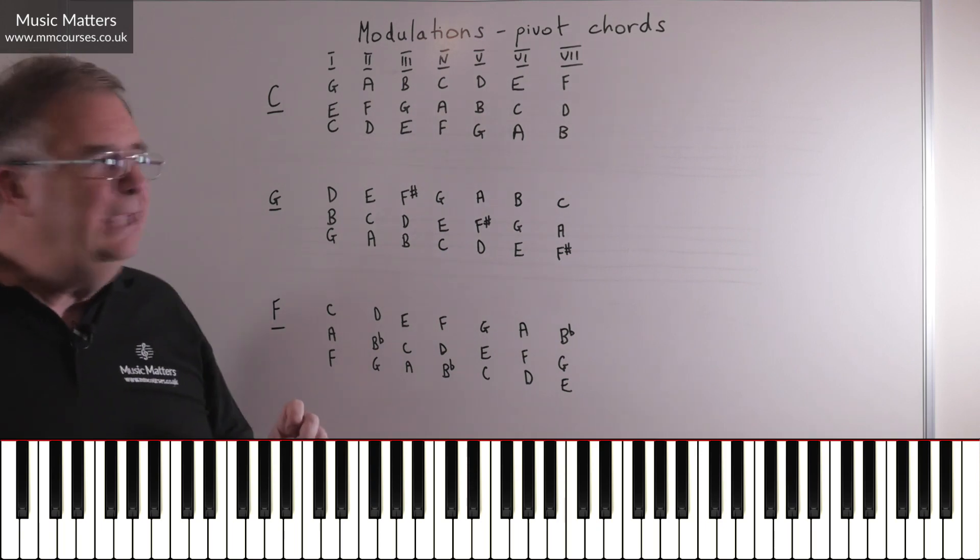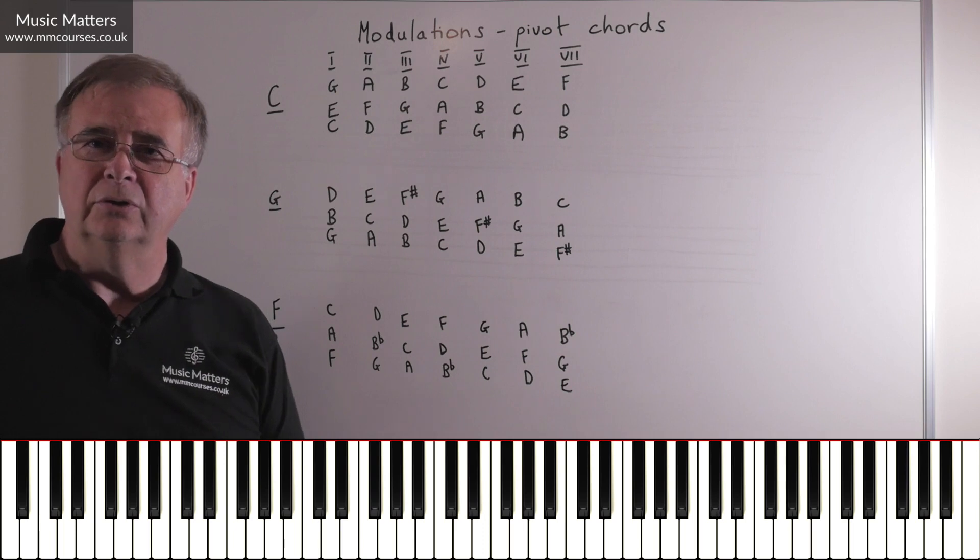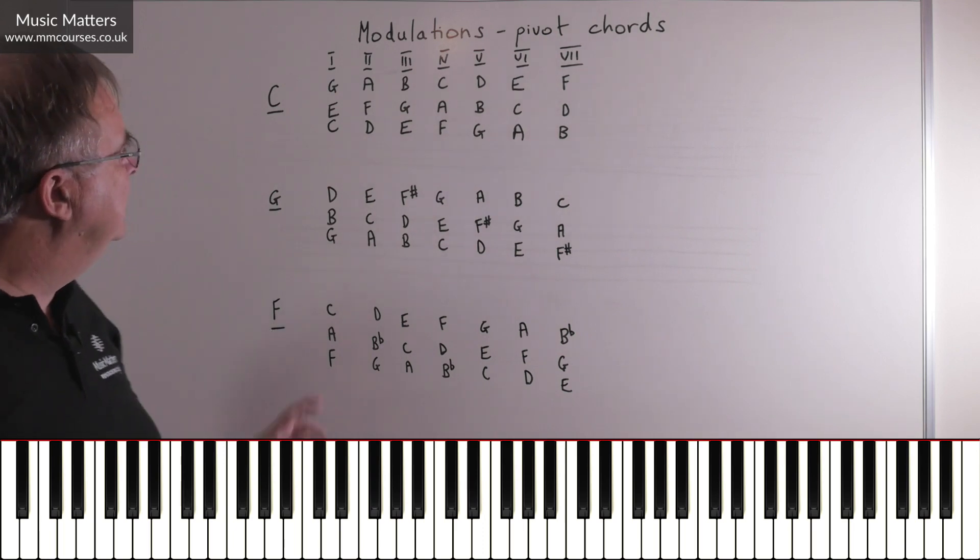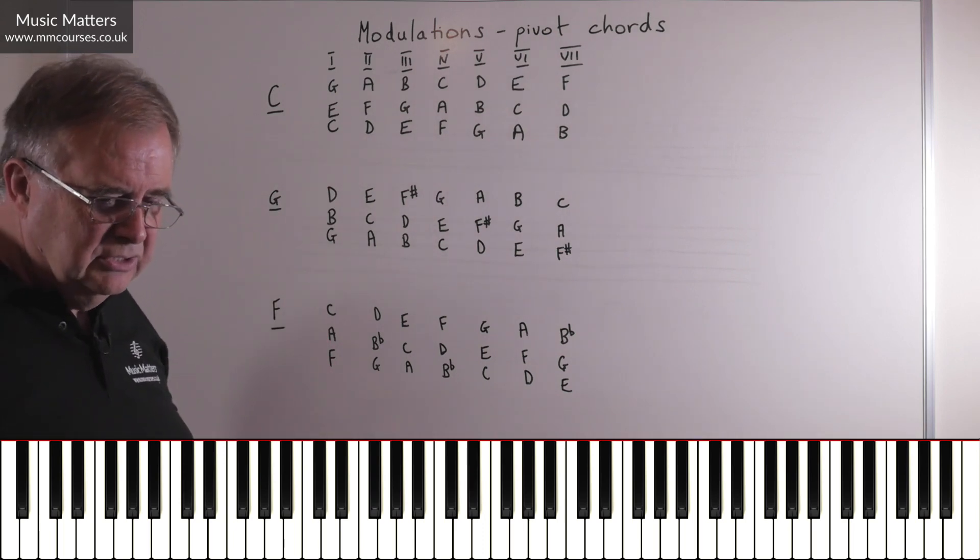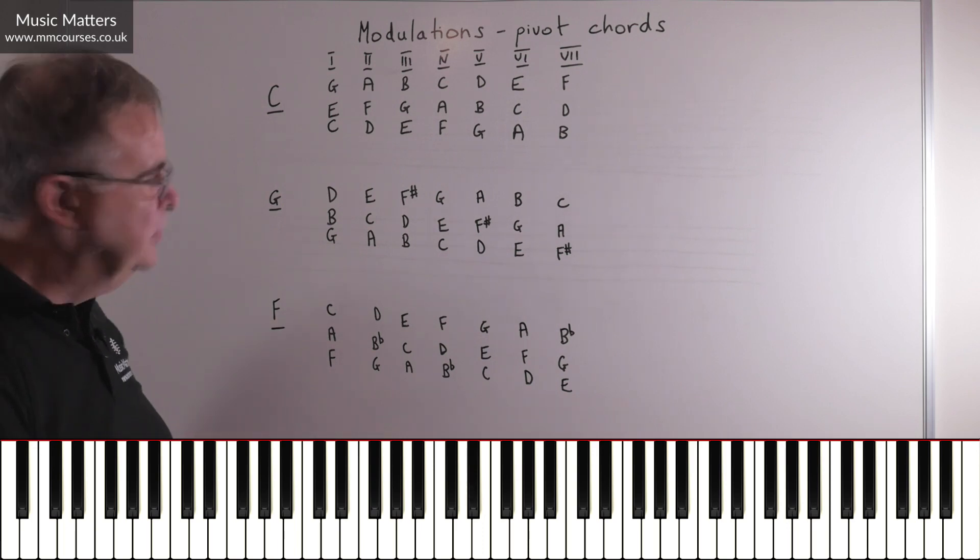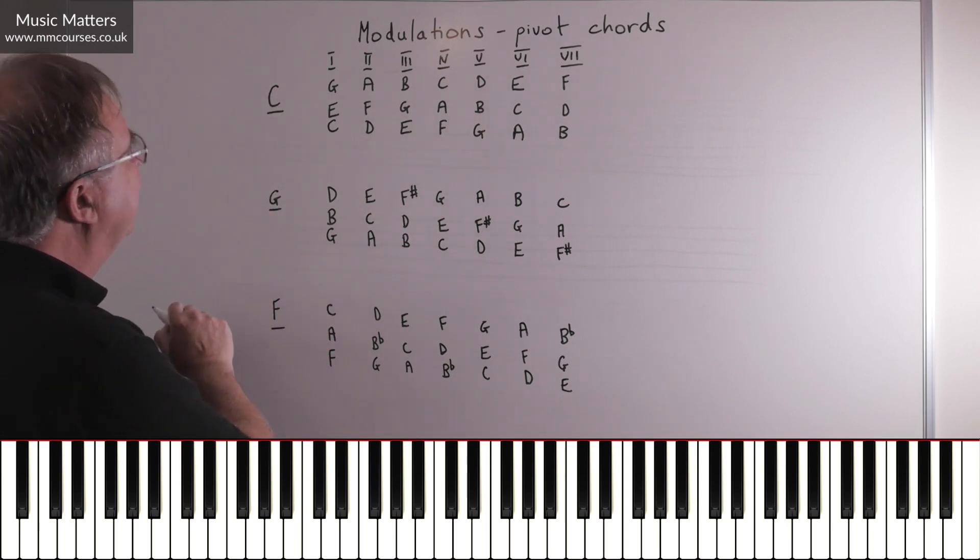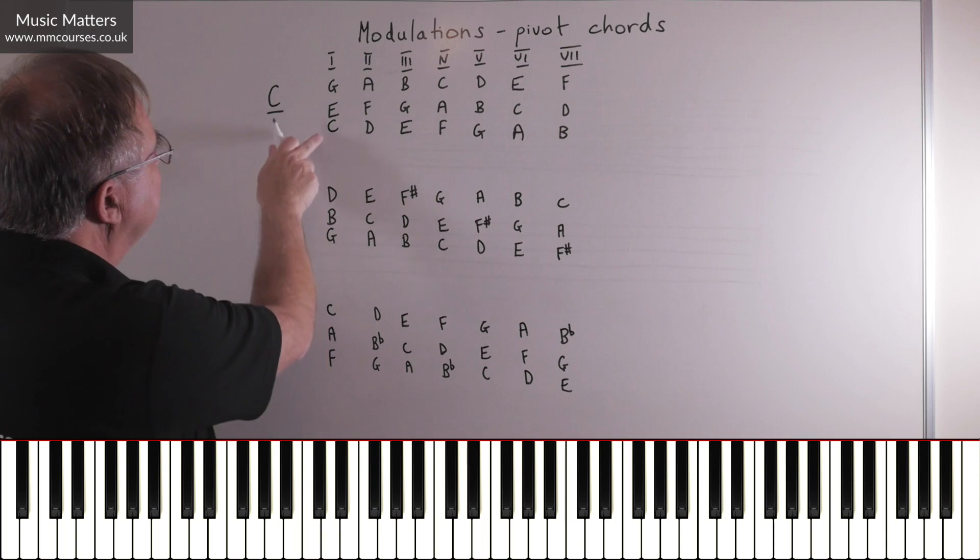The point is this. If I want to modulate from C major to G major, what are the pivot chords? In other words, the chords that belong to both of those keys. So let's color code this. So we're going to work in green, and we're going to see if we can find the chords that belong to both C major and G major.